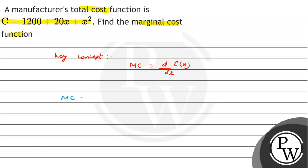MC = d/dx of cost function. So MC = d/dx of (1200 + 20x + x²).